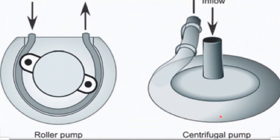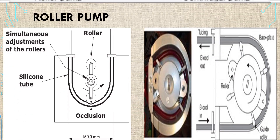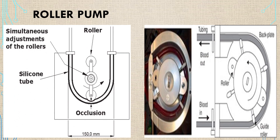There are two types of pumps: centrifuge pump and roller pump. This diagram explains the roller pump. It has silicone tubes where blood flows in and out, and there is an occlusion mechanism within the pump.